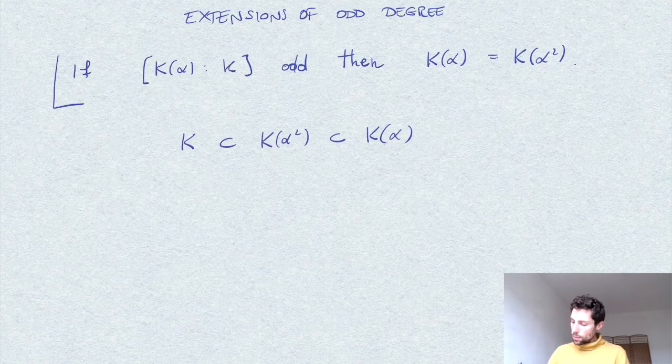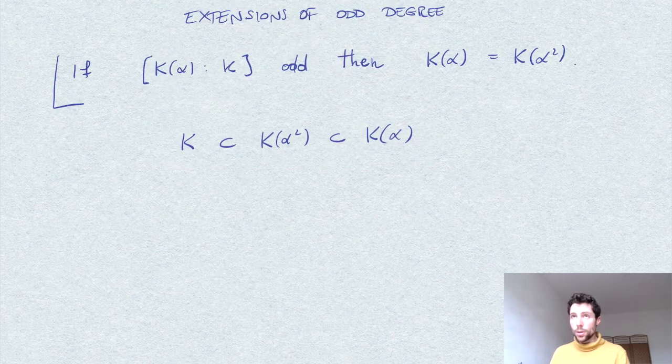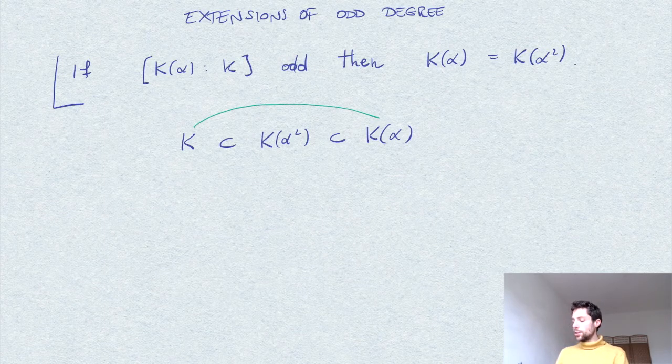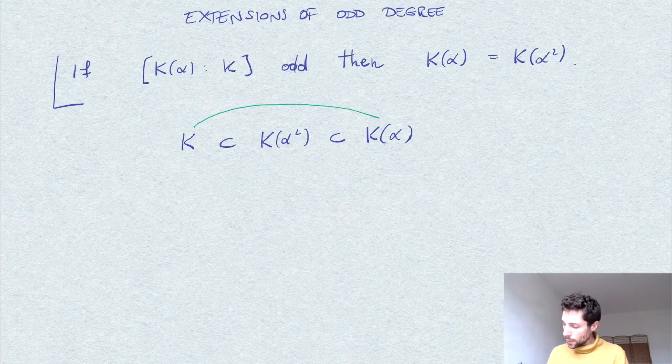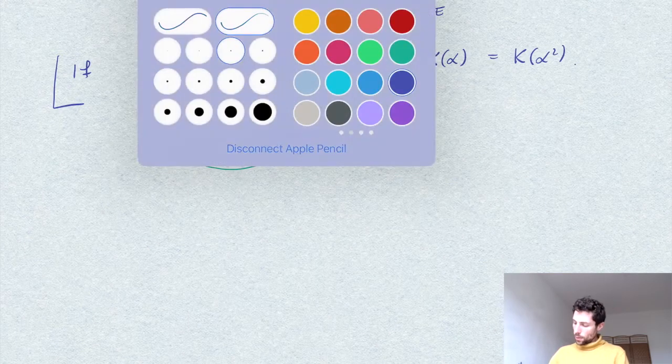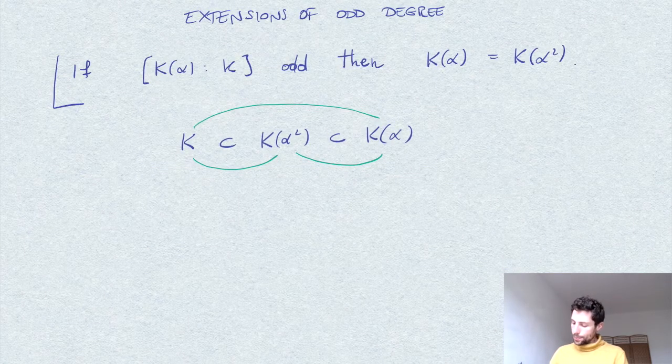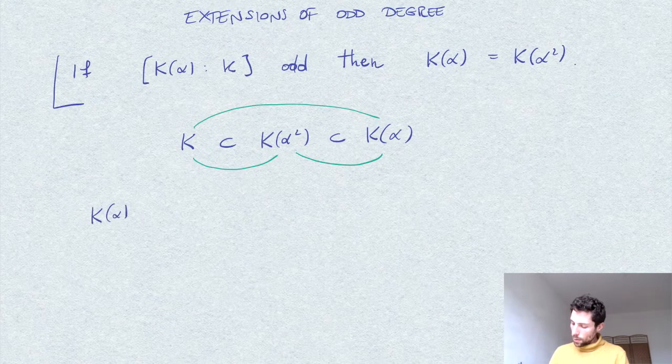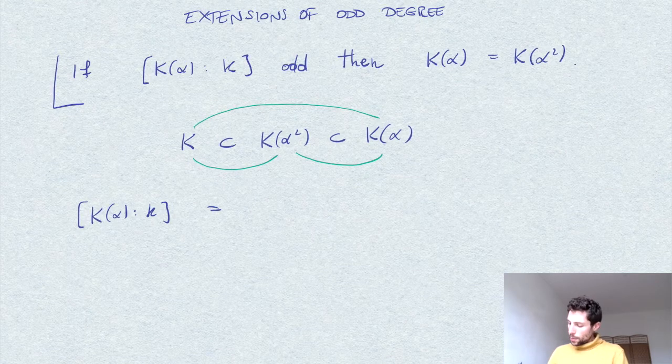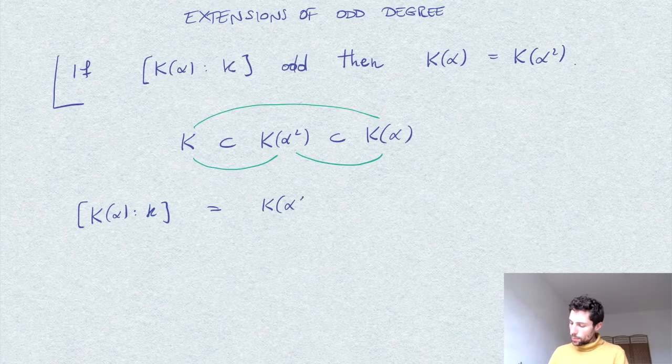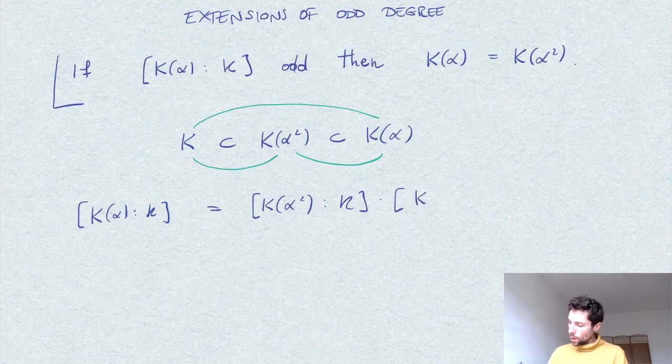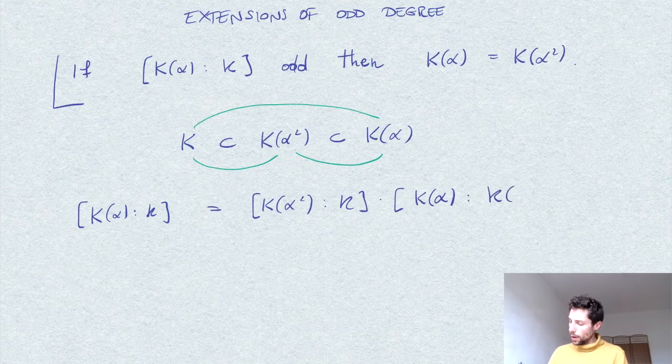So the degree formula, the degree theorem, will tell us that the degree of this extension can be written as a product of these two extensions. Rewriting this, we get degree of K(α) over K is equal to the degree of K(α²) over K times the degree of K(α) over K(α²).